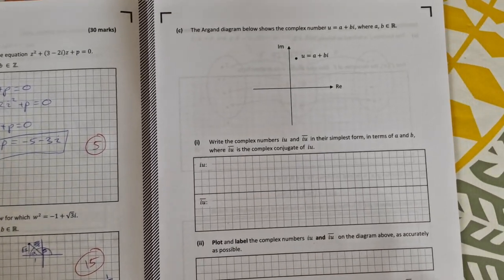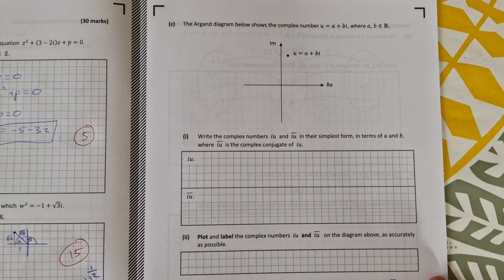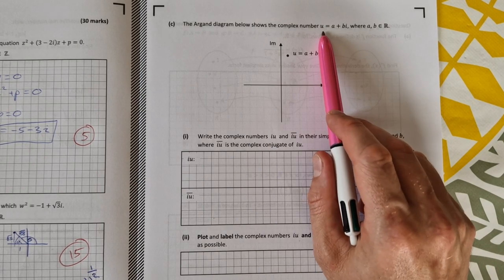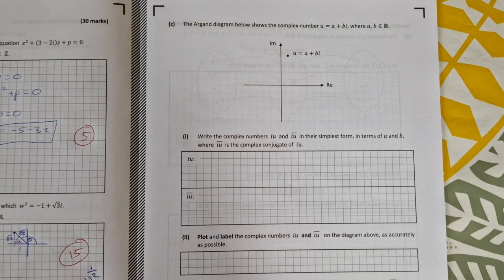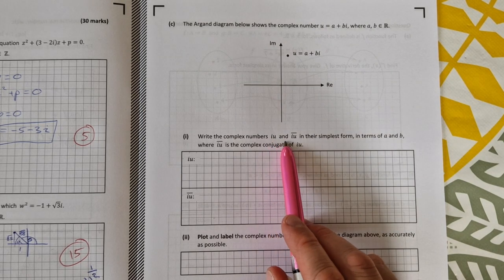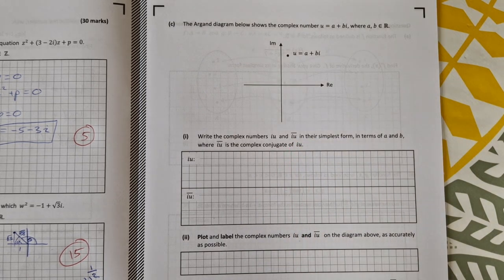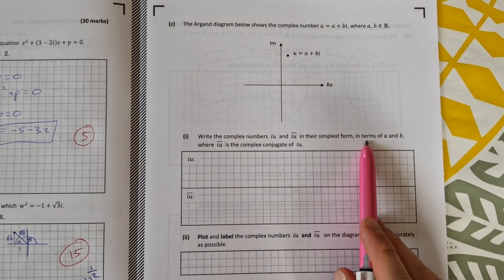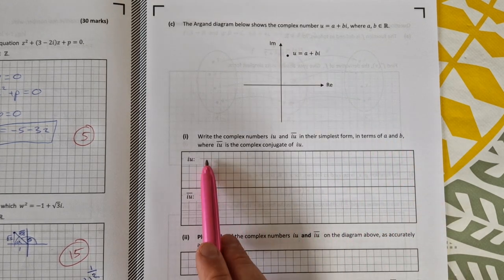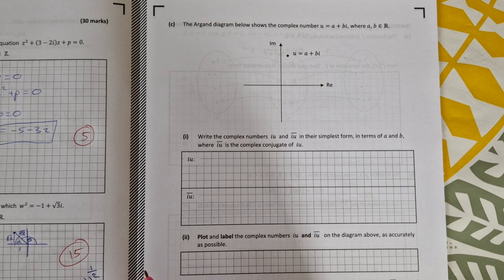Over to part c then. We have the Argand diagram. It shows the complex number u equals a plus bi, where a and b are elements of R. Write the complex numbers iu and iu bar in their simplest forms in terms of a and b, where iu bar is the complex conjugate of iu.